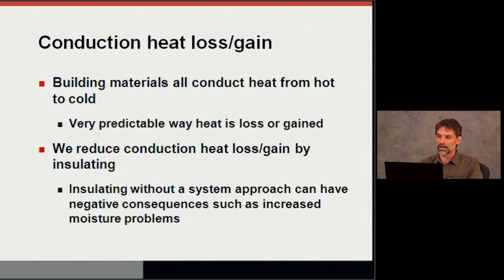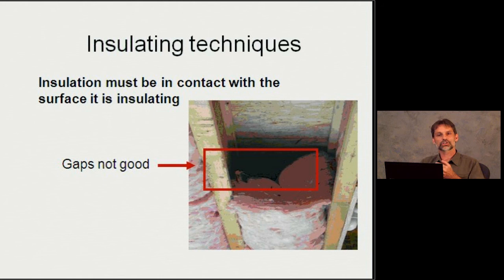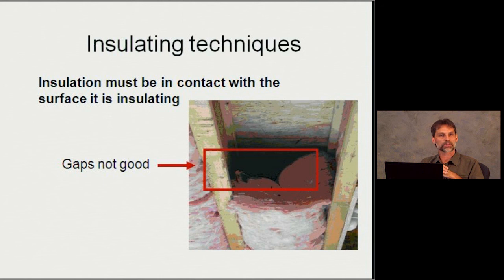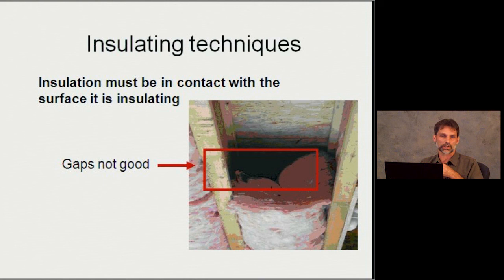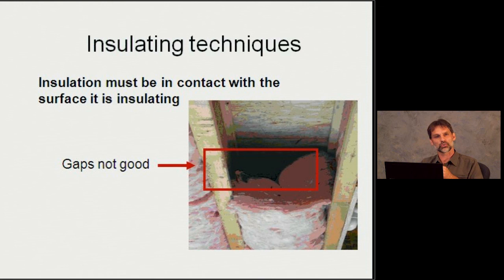Regarding insulating techniques: insulating without a good air barrier, or insulating poorly with gaps and voids, creates problems. Looking up at a floor system, a gap in the insulation does not allow for effective conduction heat loss reduction — the insulation needs to be in contact with the surface it's insulating. We might see this above garages or in cantilevered floors, where insulation has fallen or was never installed correctly. We can actually have miniature convective loops between the floor above and the insulation, robbing its effectiveness.